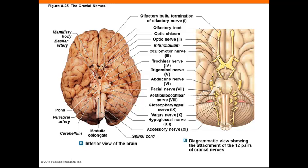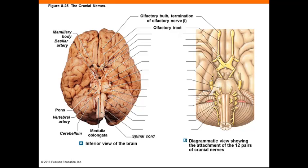Starting with the olfactory nerve, number 1: this is a sensory nerve connected to the cerebrum that carries information concerning the sense of smell. Also noted in this figure is the olfactory tract. The optic nerves are cranial nerve number 2. These are sensory nerves that carry visual information from the eyes through the optic foramina of the orbits to the optic chiasm, and they continue as optic tracts to the nuclei of the thalamus.